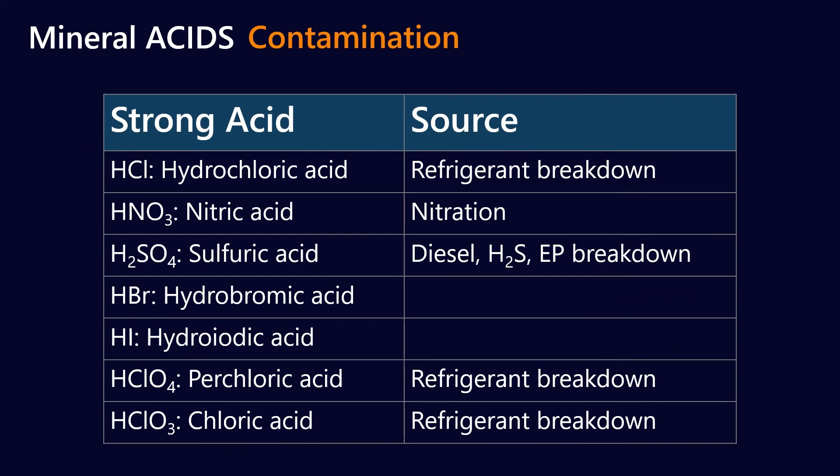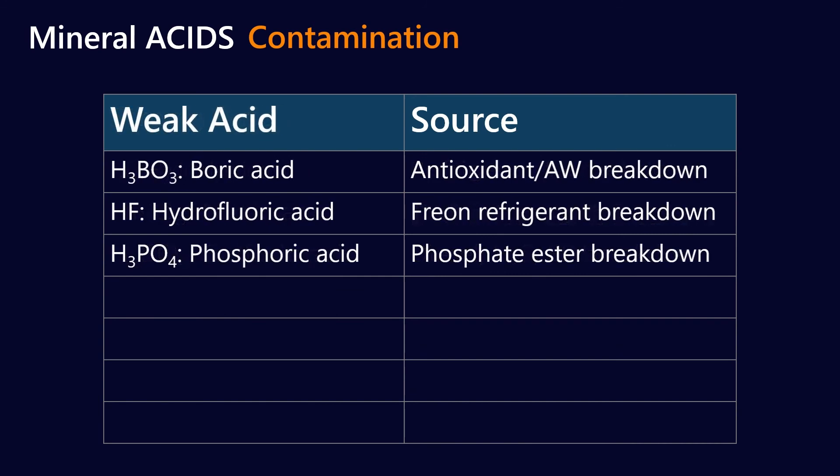So we talked about all the strong acids and where that can come from. But remember, there are also weak acids. And weak acids, I mean, there's thousands of these, but three of the crucial ones, boric acid, hydrofluoric acid, and phosphoric acid. So boric acid is itself sometimes an additive. It's an anti-wear additive. But there are a whole bunch of borated esters and other boron-based additives that can break down and form boric acid.